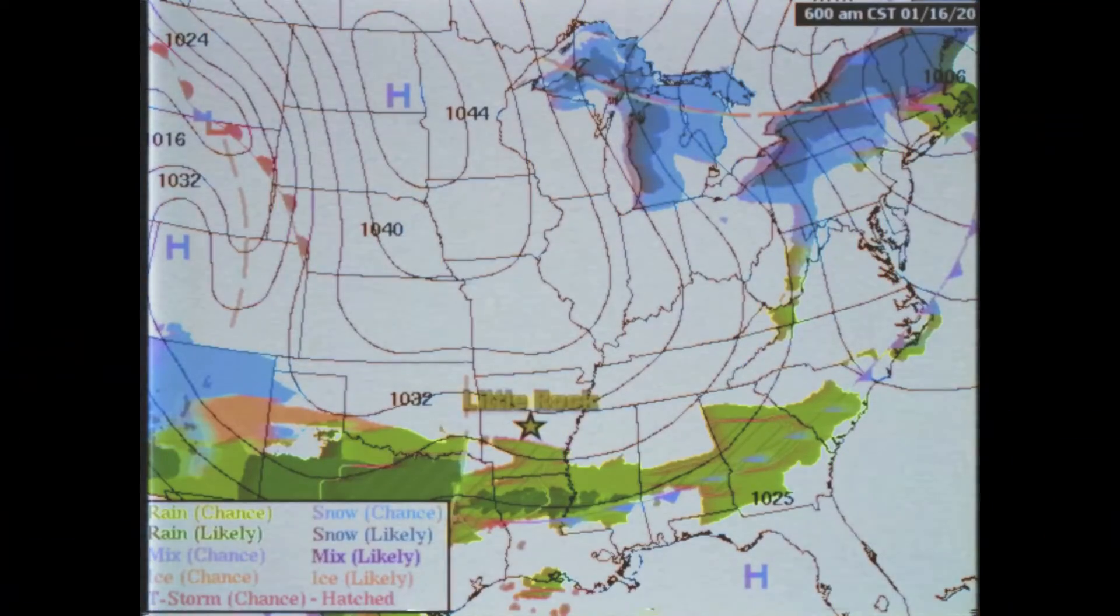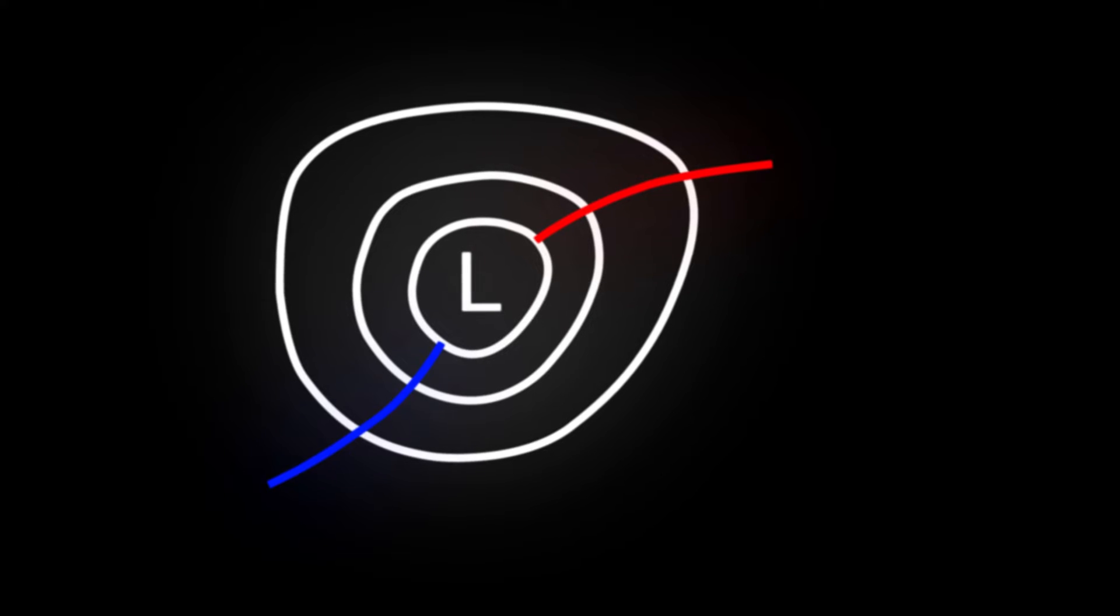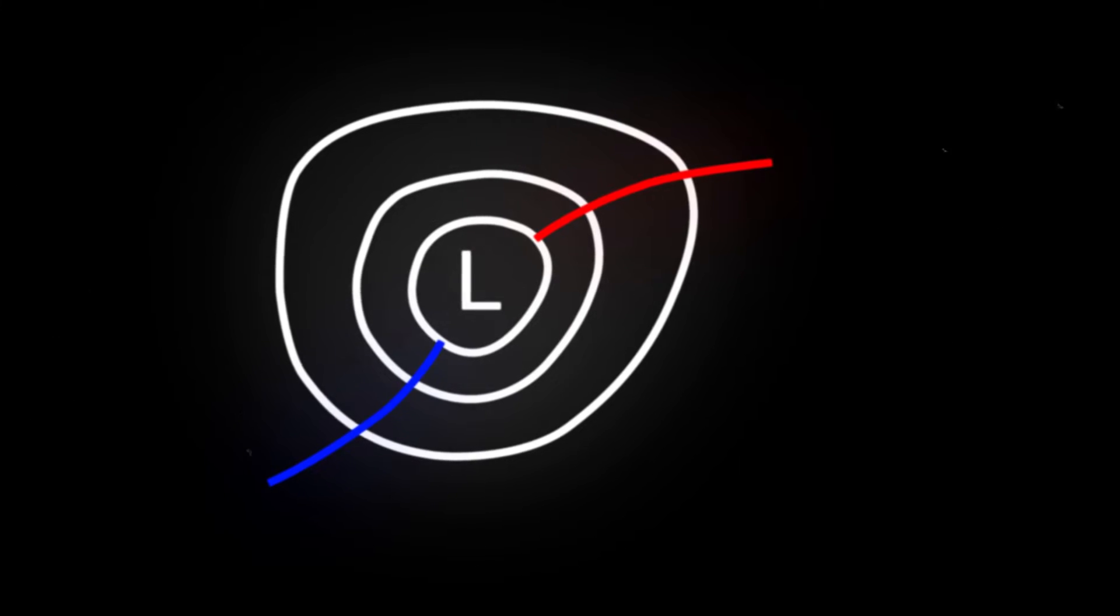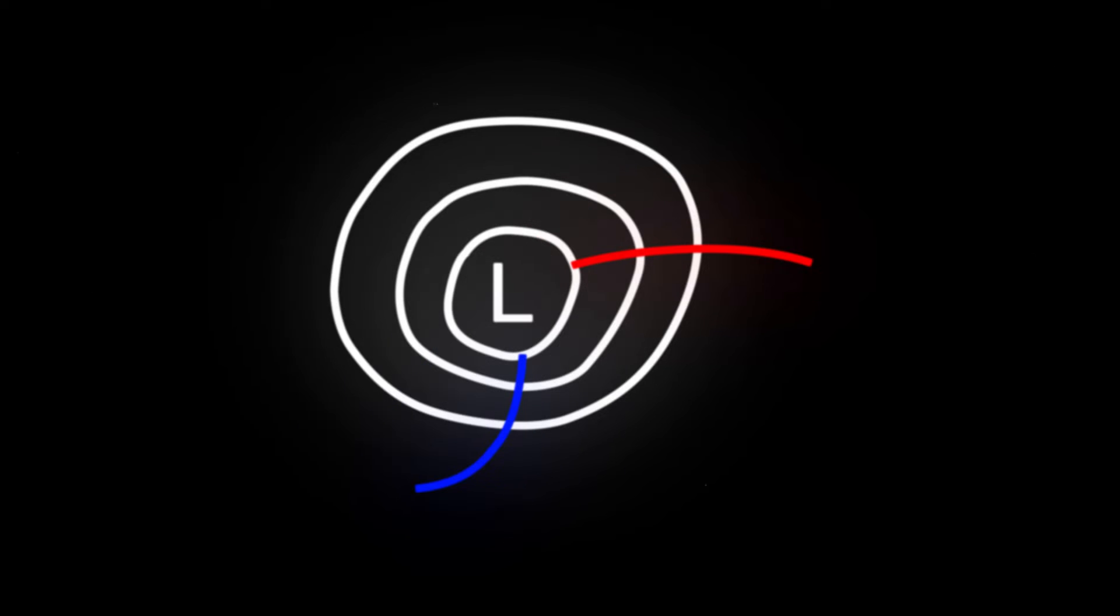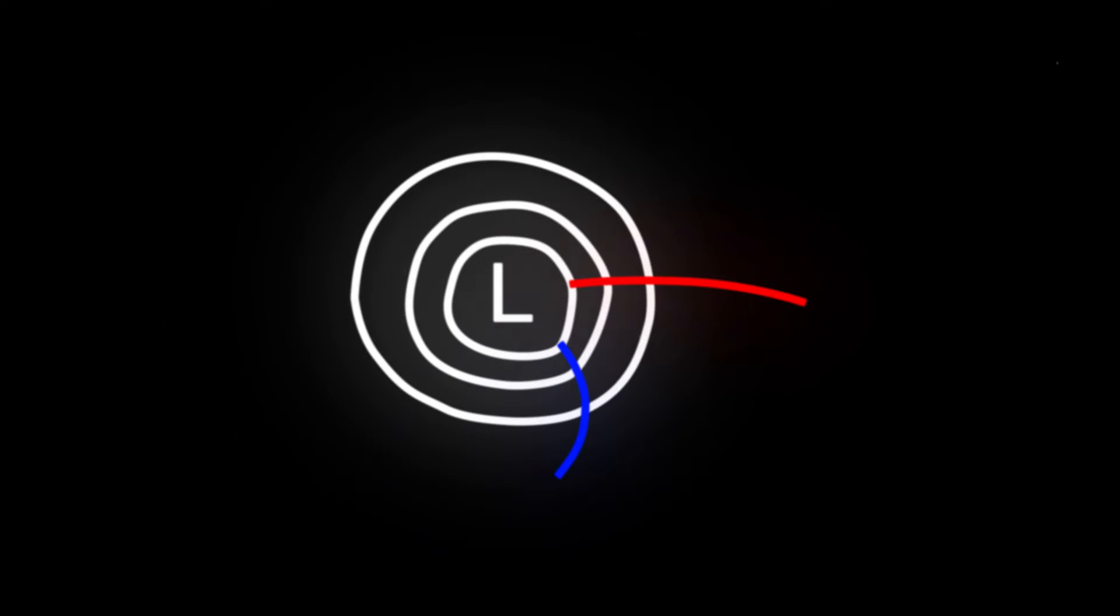In January, high pressure from Canada dominates over the Midwest, pushing the jet stream and cold air further south. Along this temperature boundary, we find our old friend, the mid-latitude cyclone, which moves from west to east beneath the jet stream. The cyclone has a warm front stretching out to the east and a cold front stretching to the south. As it moves from west to east, the cold front begins to catch up to the warm front, creating an occlusion.